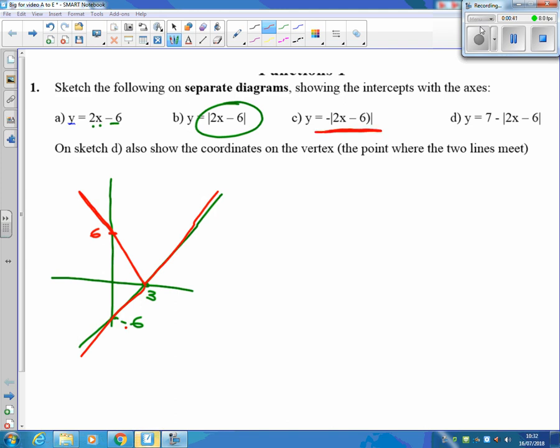Now we've got the same graph but everything's being made negative, so it's now being flipped back down again. This is the graph we're looking at here. It's crossing at 3 there and it's crossing down here now at minus 6.